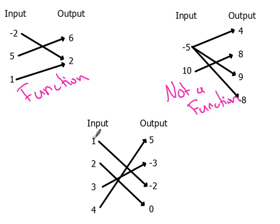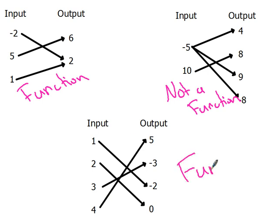For the last one: one goes to negative two (only one), two goes to zero (only one), three goes to negative three (only one), and four goes to five (only one). Everything only goes to one output, so that is a function.